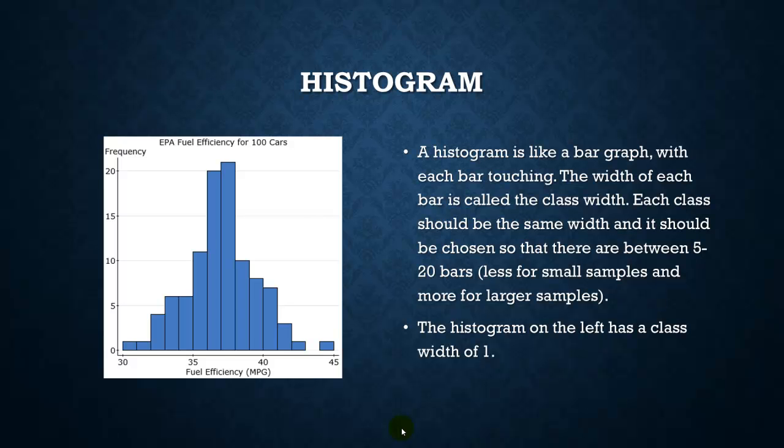So again, same kind of picture here, but now we're dealing with a histogram. A histogram, like a stem and leaf plot, is essentially like just bars. In this case, each bar has a width of one. So here's 30 to 31, 31 to 32, et cetera. And we just have the frequency of each group.